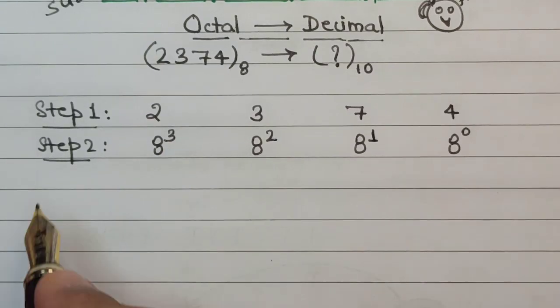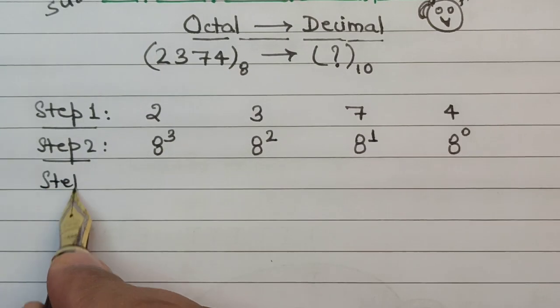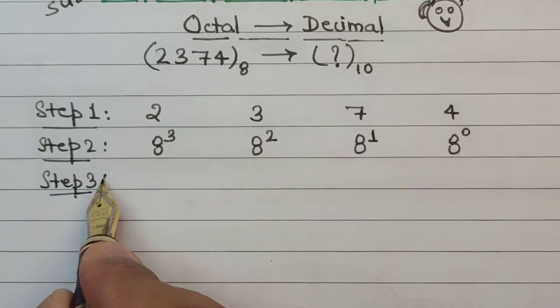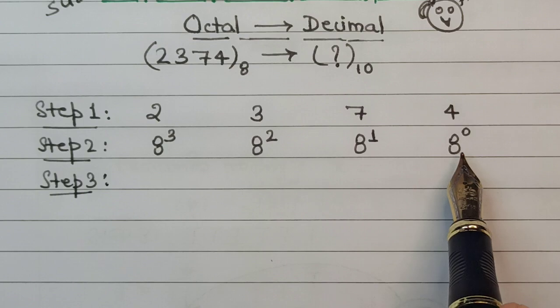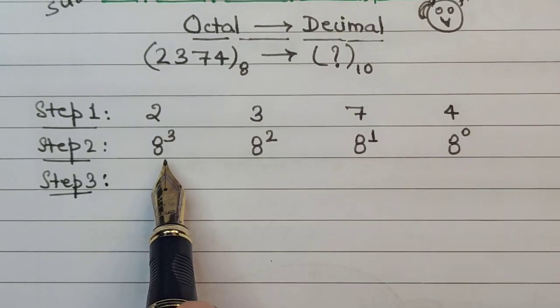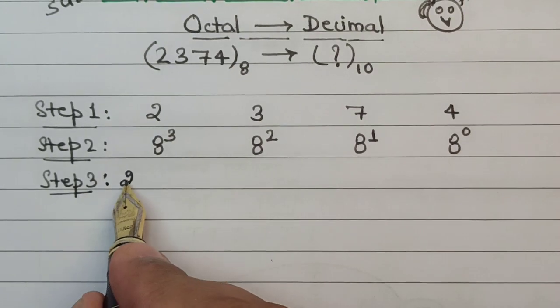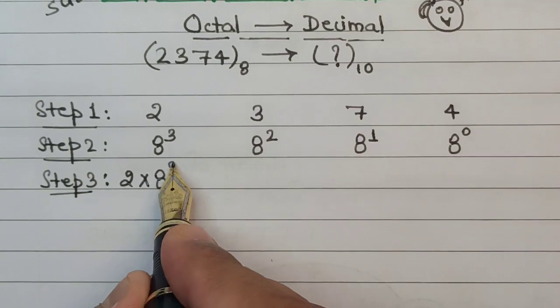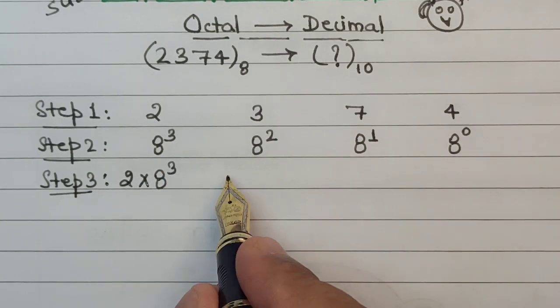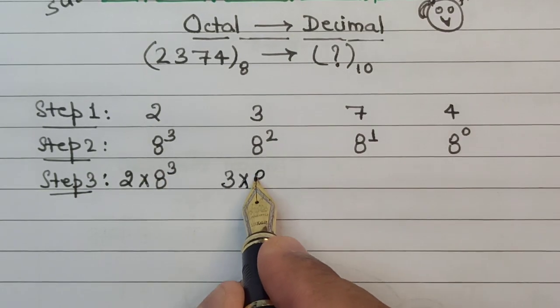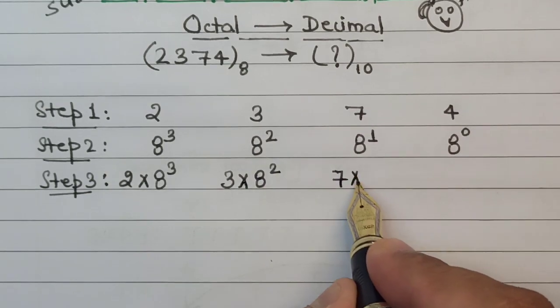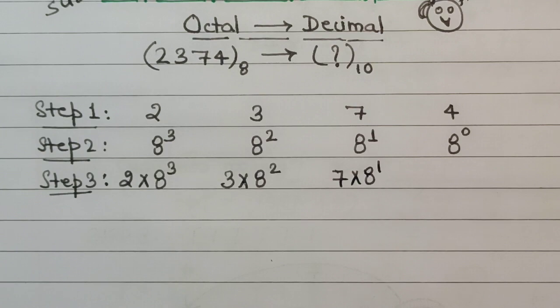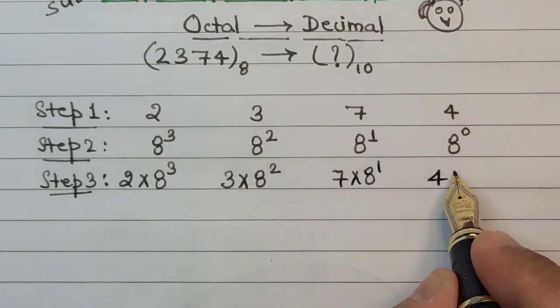In step number three, which now is the final step, we multiply these numbers in pairs as they occur in the same column. So here we have 2 and 8 to the power 3, so we multiply 2 and 8³. Then we multiply 3 and 8², similarly we multiply 7 and 8¹, and in the last we multiply 4 and 8⁰.